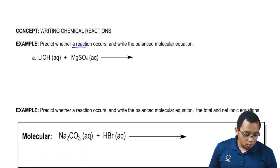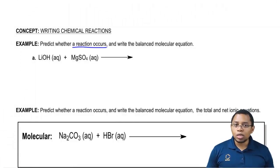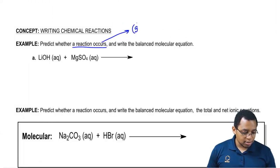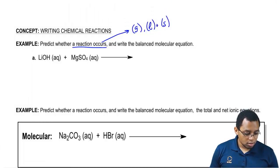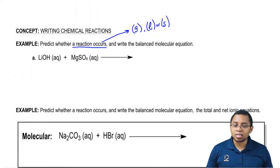First thing we're going to say is a reaction only occurs if we create a gas, a liquid, or a solid. We have to produce one of these types of products.